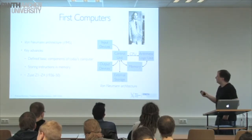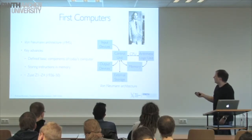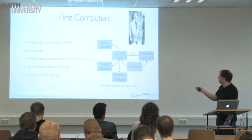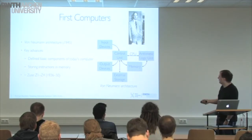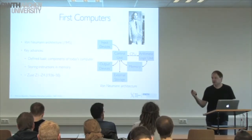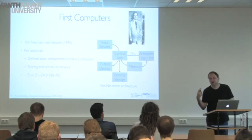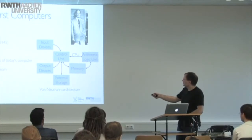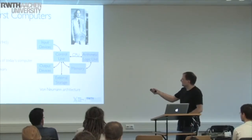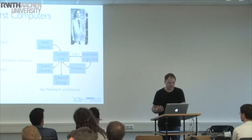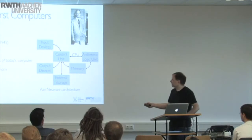The von Neumann architecture basically says we have the central control unit and the arithmetic logic unit — which you've probably seen in technical computer science — making up the CPU, with memory between these components. Interestingly, von Neumann already included in his basic architectural design the user interface of that computer, in the form of saying there are going to be input devices and output devices. These are the representations of the user interface in the broadest sense in the von Neumann architecture — very similar, by the way, to Zuse's design of the Z1 to Z4 around the same time.